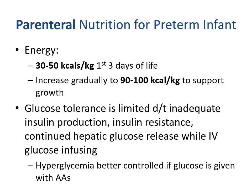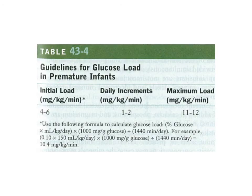Energy needs are approximately 30 to 50 calories per kilogram for the first three days of life — significantly lower than a term infant — then gradually increasing to 90 to 100 calories per kilogram. Glucose tolerance is limited due to inadequate insulin production, insulin resistance, and continued hepatic glucose release in addition to IV glucose. Hyperglycemia is better controlled if glucose is also given alongside amino acids in the parenteral nutrition regimen.